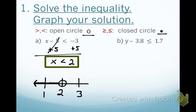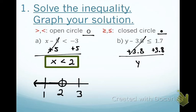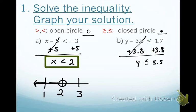Next problem: identify the variable — Y. What is not allowing Y to be alone? We're going to add by 3.8 on both sides. This cancels out. The inequality symbol says less than or equal to. Now on the right side, 1.7 plus 3.8 — you're allowed to use calculators on this chapter. The answer is 5.5. Y is less than or equal to 5.5.